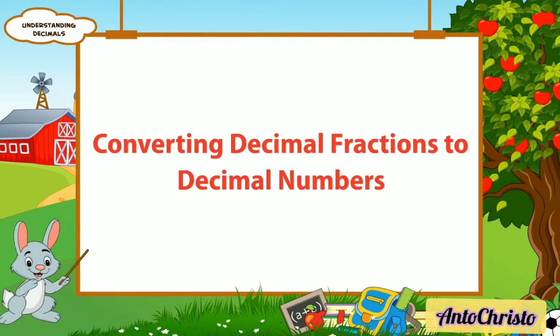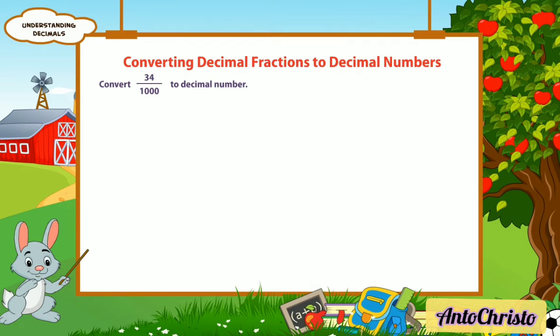Converting decimal fractions to decimal numbers. Let us convert 34 by 1000 to a decimal number.